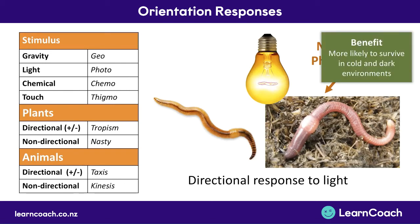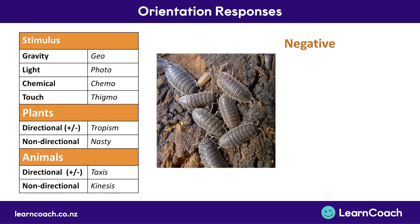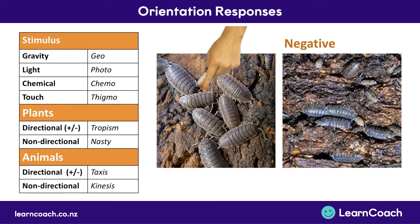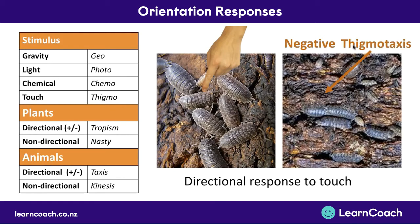The benefit for the worm is that it's more likely to survive in cold, dark environments — out in the open, birds and other predators could eat or step on it. Another example: if you touch a slater, it runs away to hide. This is a directional response to touch, so touch is 'thigmo' and a directional animal response is 'taxis' — thigmo taxis. Because it's running away, it's negative thigmo taxis. Just like the worm, the benefit is moving as quickly as possible away from predators.